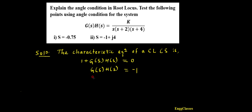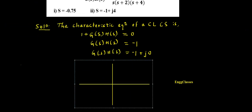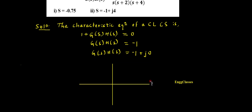I can write G(s)H(s) = -1 + j0, expressing it in terms of real and imaginary parts in rectangular form. I need to plot this on the x-axis and y-axis, where this is the real axis and this is the imaginary axis. The point -1+j0 lies on the left-hand side with imaginary part 0, so that point lies somewhere here, which I call -1+j0.